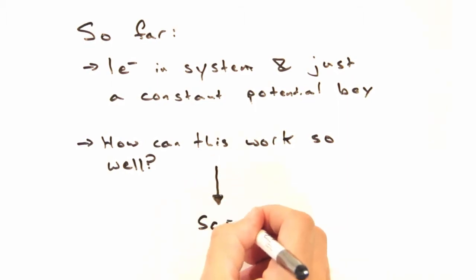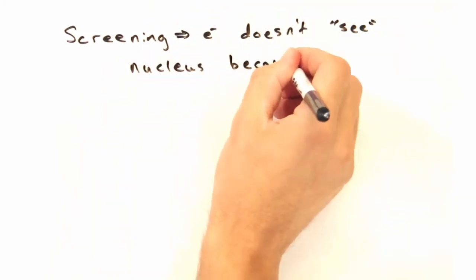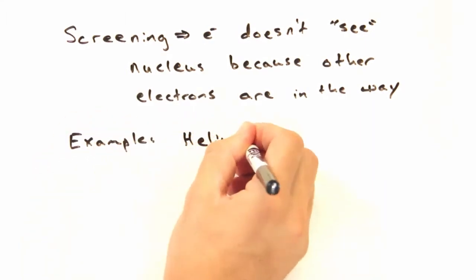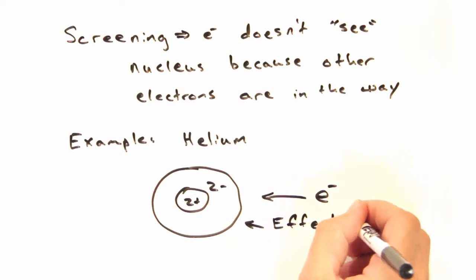In short, it comes down to screening and some assumptions about the type of interactions allowed within a solid. And isn't screening how an electron won't see the nucleus because all the core electrons are in the way? Yeah. An example of that would be the helium atom with two protons and two electrons.